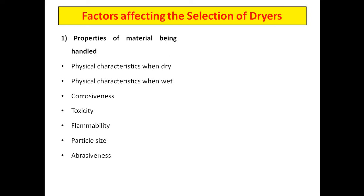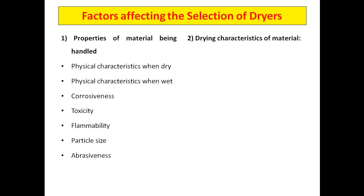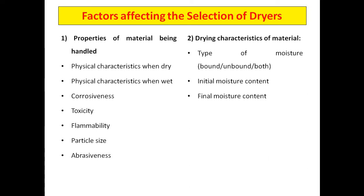Next, the abrasive nature of the material must also be checked. Regarding drying characteristics: first, the type of moisture — whether bound, unbound, or both. Then the initial moisture content and the final moisture content. The permissible drying temperature must be determined; you should not exceed the permissible heating or drying temperature in order to keep the material safe.